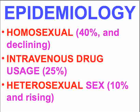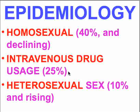The epidemiology of AIDS has changed a bit. In general, the heterosexual causes are on the rise, while the homosexual causes are on the decline. The intravenous drug use causes remain number two and have stayed about the same — it hasn't changed very much.